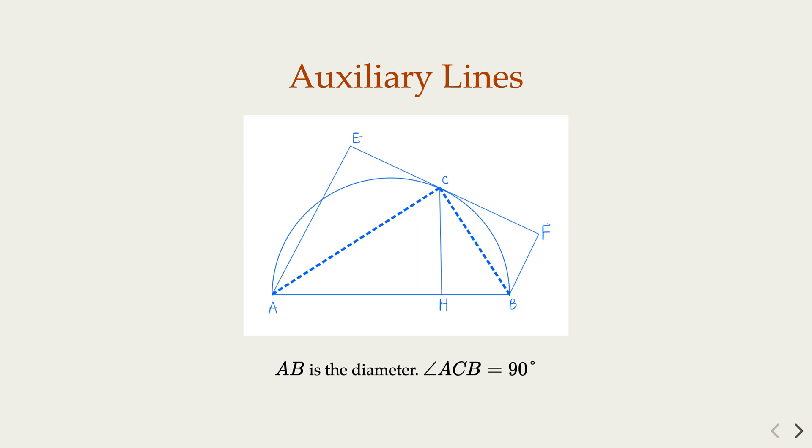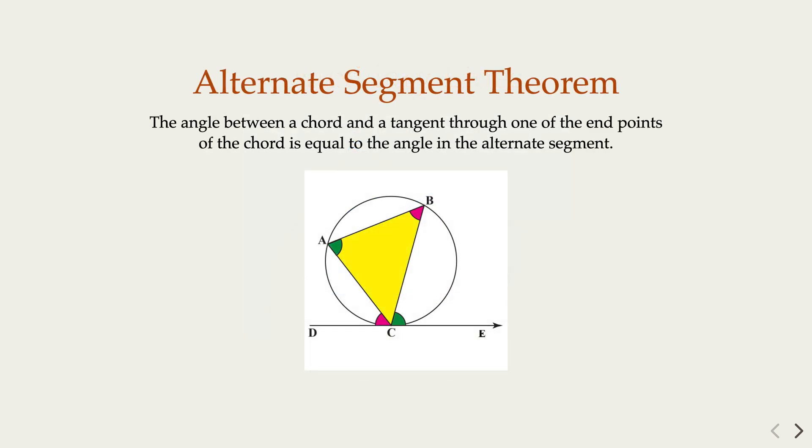Now, another useful fact in this problem is the alternate segment theorem. So basically what it says, if you have a circle and a tangent line at tangent point C, then the angle between the tangent line and the chord is equal to the other side of the angle.